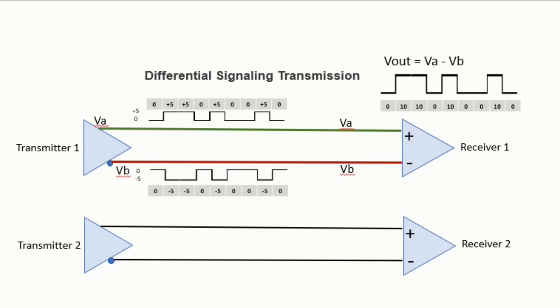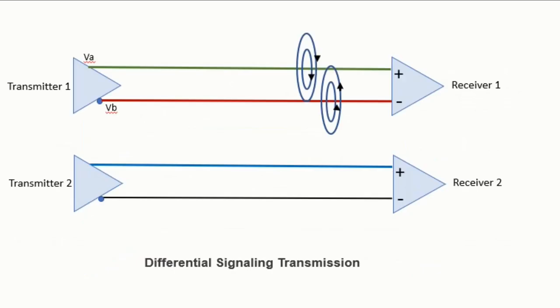So we have the output Vout equal Va minus Vb. Now I have said that the crosstalk will be eliminated. In reality it will not be completely eliminated but it will be drastically reduced.